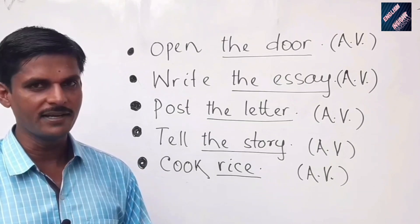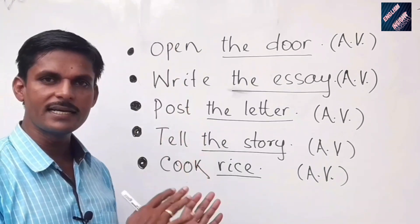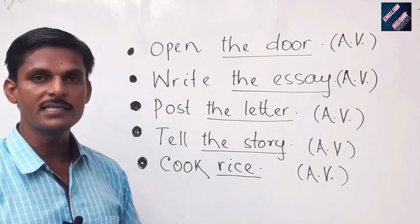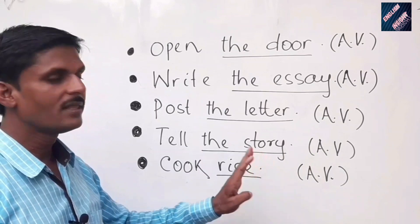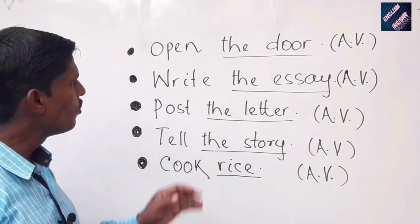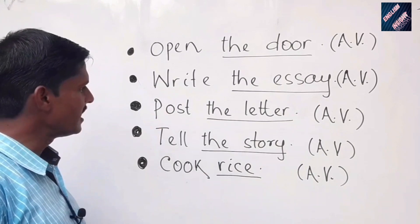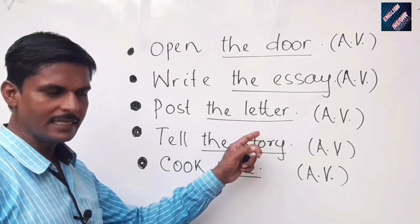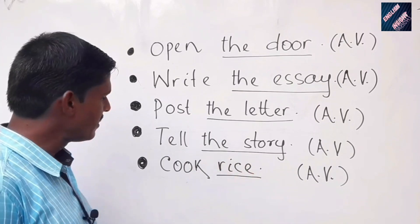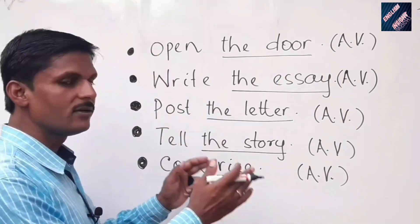The previous sentences were not in active voice, so they cannot be turned into passive voice. But five new sentences are cited here, and they are all in active voice because there are objects in the sentences. 'Open the door' — 'the door' is the object, so 'open' is a transitive verb. 'Write the essay' — 'essay' is the object. 'Post the letter' — 'letter' is the object. 'Tell the story' — 'the story' is the object. 'Cook rice' — 'rice' is the object, so 'cook' is a transitive verb. All these sentences can be turned into passive voice.